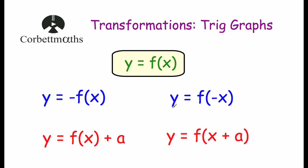Then we've got y = f(-x). That's a reflection in the y-axis, so points on the right-hand side of the y-axis will reflect to the left-hand side, and vice versa. Points on the y-axis will be invariant — they'll stay where they are.